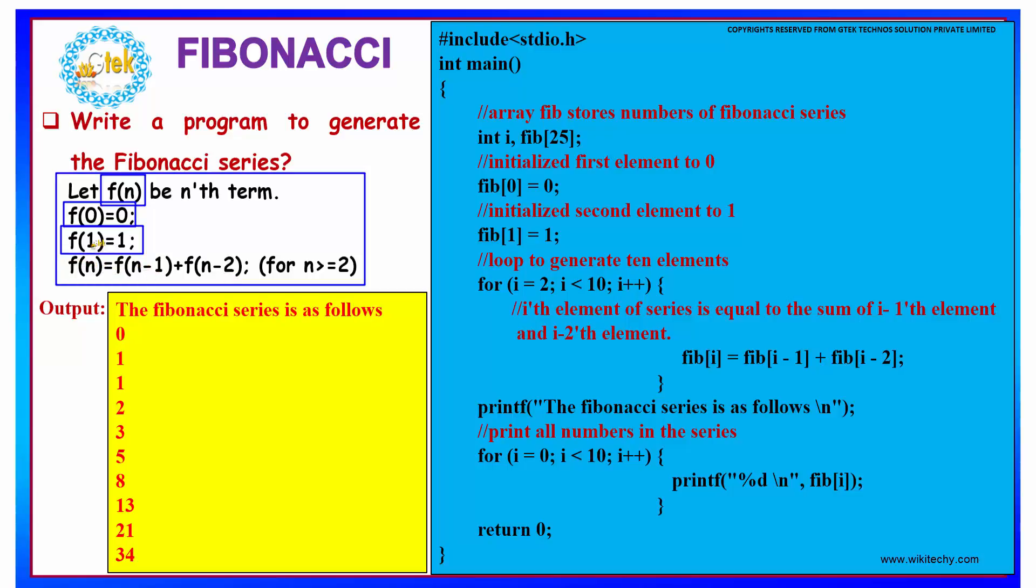To find our next value, say F(2), we have to add the previous two terms, that is 0 and 1. That can be done by: if our next term is F(n), then we have to add F(n-1) and F(n-2) to obtain our F(n).